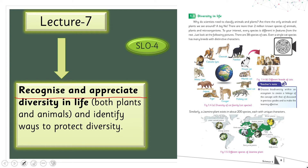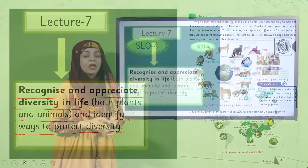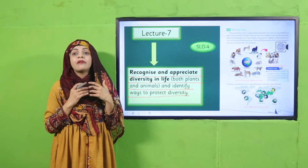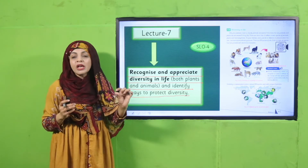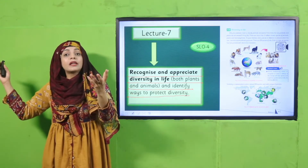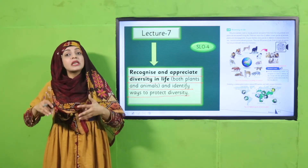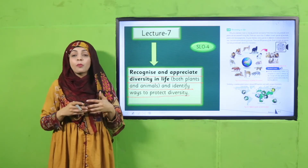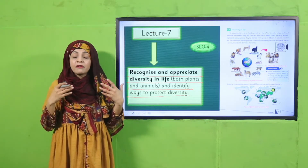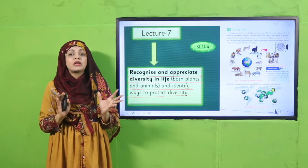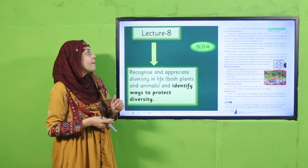In lecture number seven, students will be able to recognize and appreciate diversity in life — both in plants and animals — and identify ways to protect diversity. You will see how plants and animals are extremely diverse groups. You will find the smallest animal and the largest like a blue whale, the smallest plant and tall huge trees — some bearing flowers, some bearing fruits, and some bearing no flowers at all.